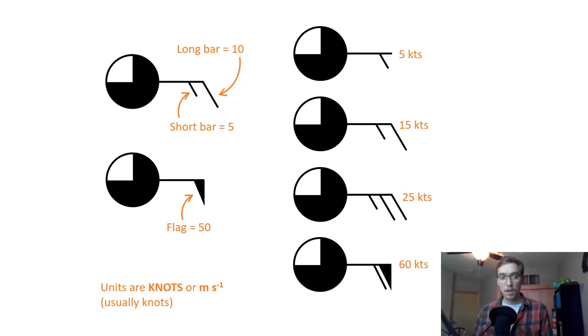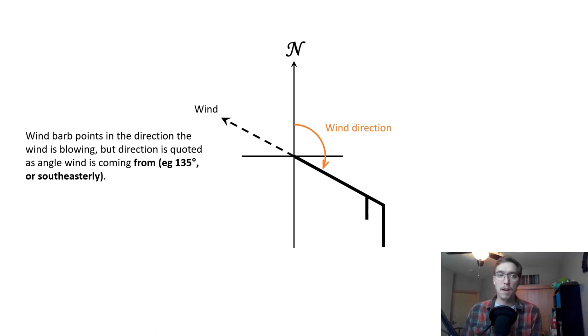Now also easy is the direction. If you remember from our definitions lecture from the first week, we talked about how when you're talking about wind direction, you're talking about the direction that the wind is coming from, not the direction that the wind is going towards. So here wind barbs point in the direction the wind is blowing, but direction is quoted as an angle. So we're saying that it's coming from 135 degrees, or it's a southeasterly wind if it's blowing from the bottom right quadrant, but it's blowing towards the upper left quadrant. So it's blowing towards the northwest, but it's a southeasterly wind.